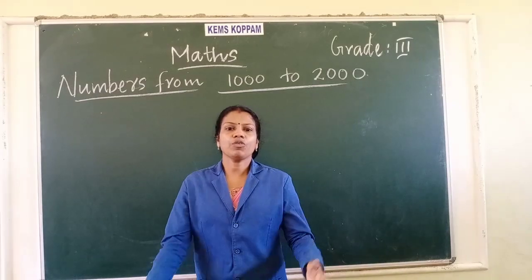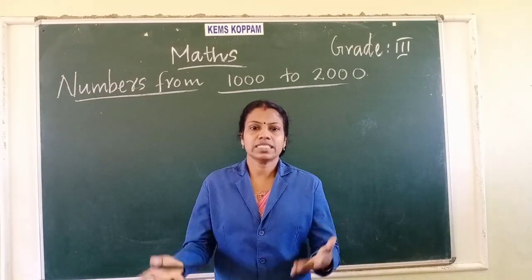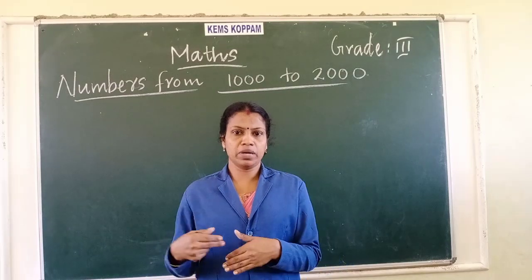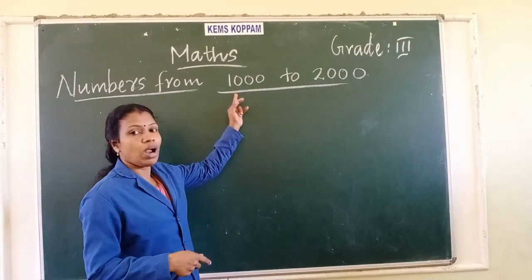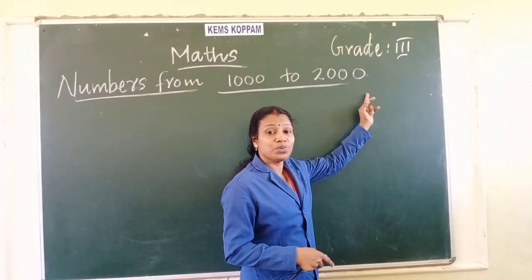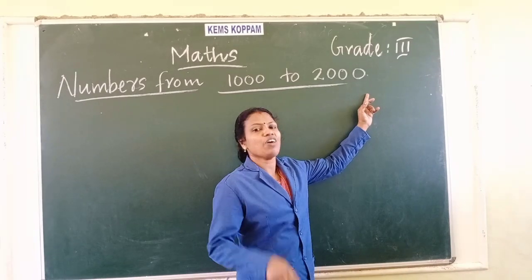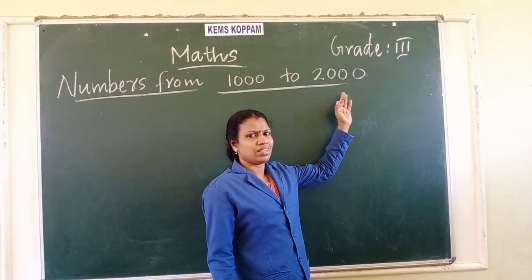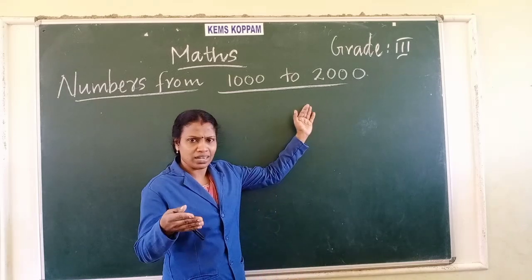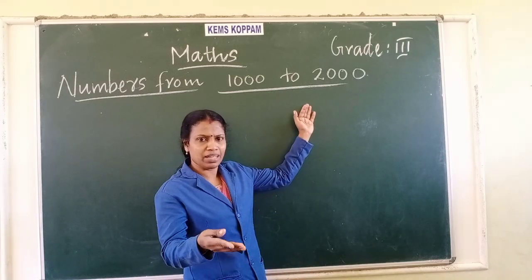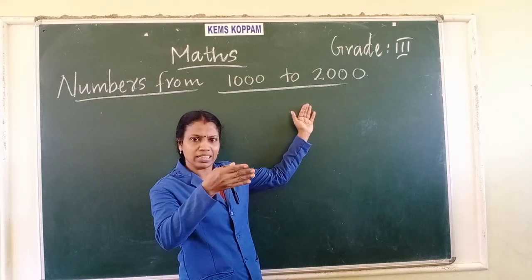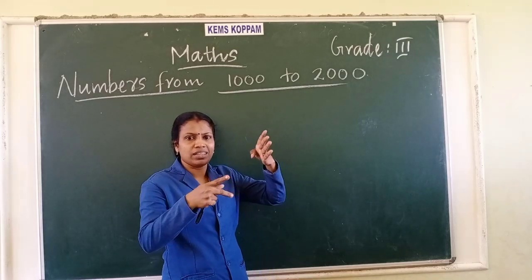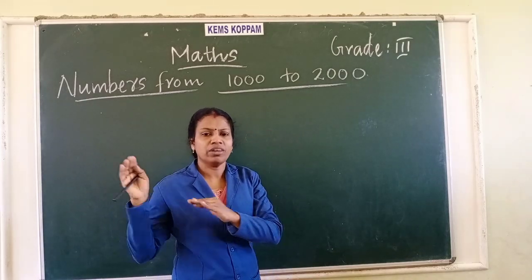Now we are going to study the numbers — how to write the numbers from 1,000 to 2,000. How will you make the numbers? By adding 1, we will get the next number. That is the order. Numbers order: 1, 2, 3, 4 — numbers keep going.